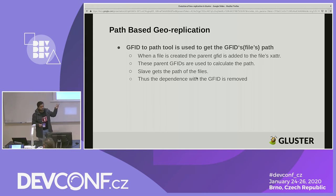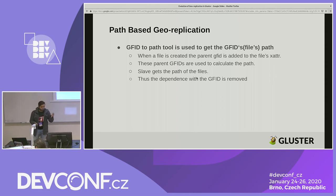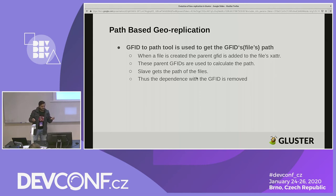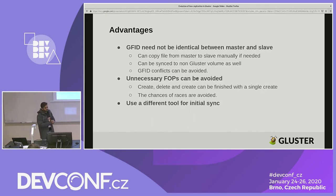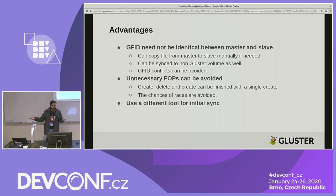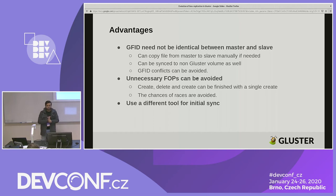We use a tool called gfid2path, which is capable of generating the whole path from the file. The slave just gets the path now instead of a GFID, simplifying the process and removing the dependency on GFIDs. The advantages of this approach: GFIDs need not be the same on master and slave, the slave doesn't even need a GFID, so it doesn't need to be a Gluster volume. You can sync a Gluster volume to any other volume — your normal file system, CIFS, or whatever you want.